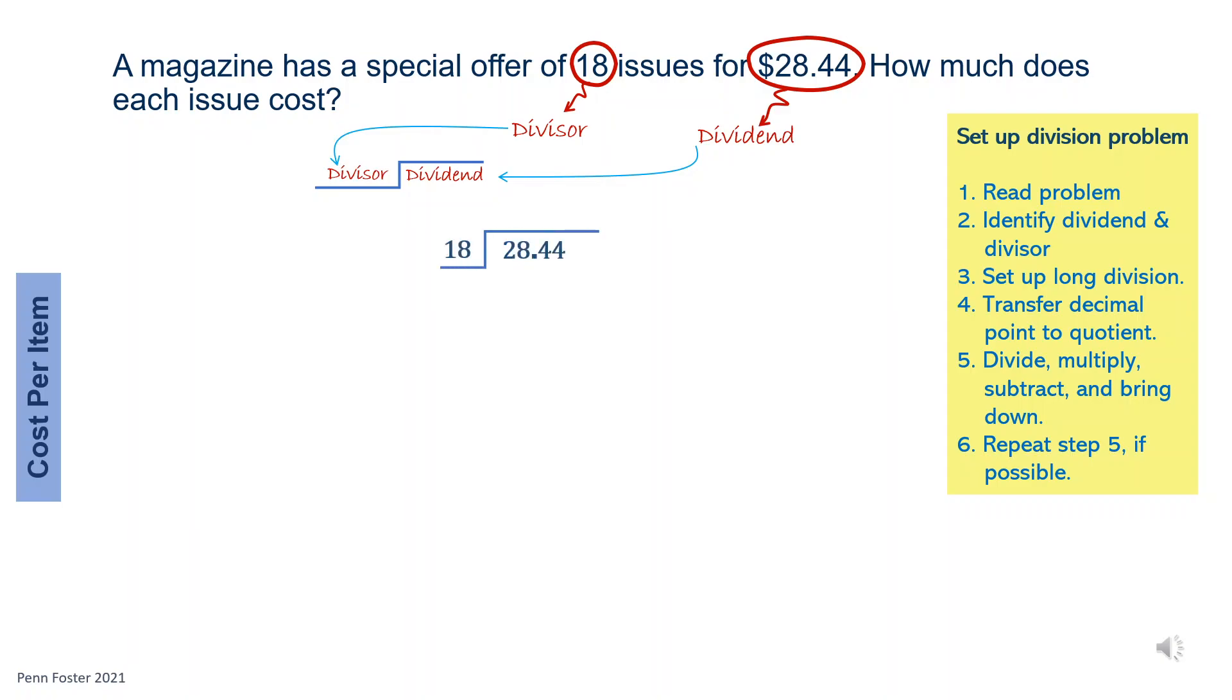First step is replicate the decimal point that shows on the dividend if it exists. In this case, the dividend is a decimal number, so put a decimal point on the top right above the existing decimal point. The top will hold the quotient or division answer.